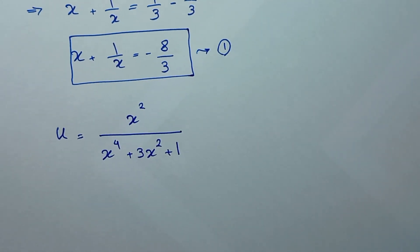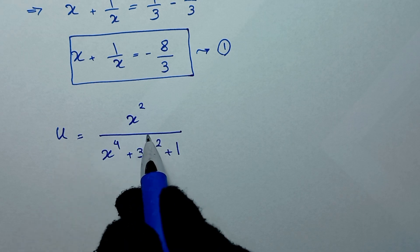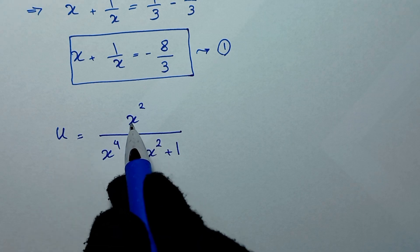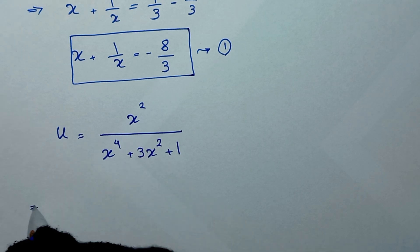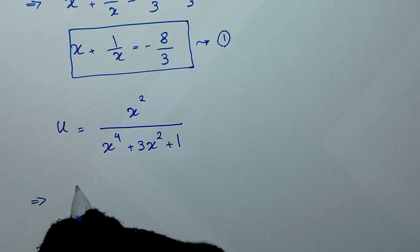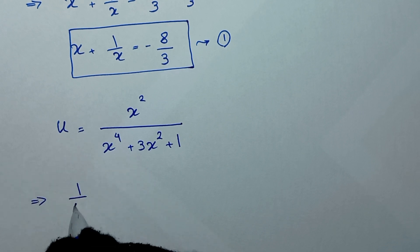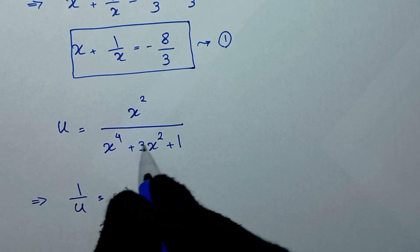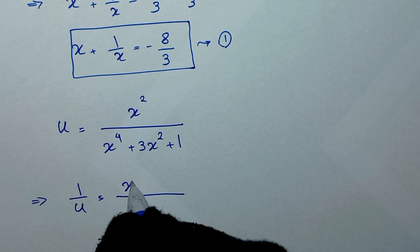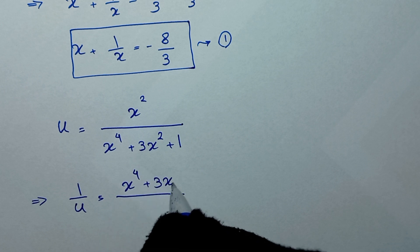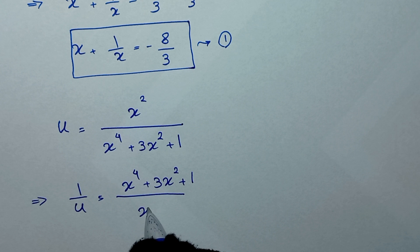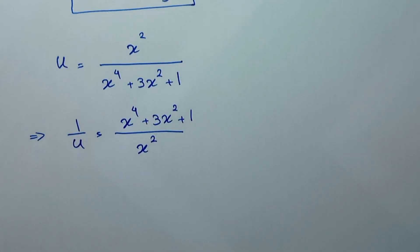In the next step, we reverse the numerator and denominator of u. So 1 over u is equal to x to the power of 4 plus 3x squared plus 1 over x squared.